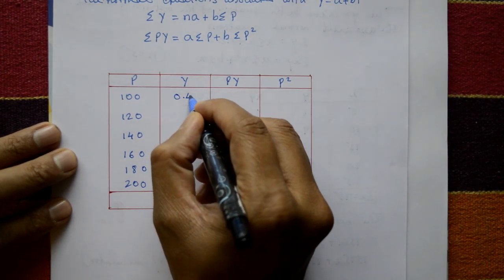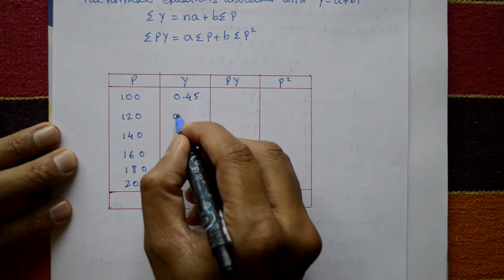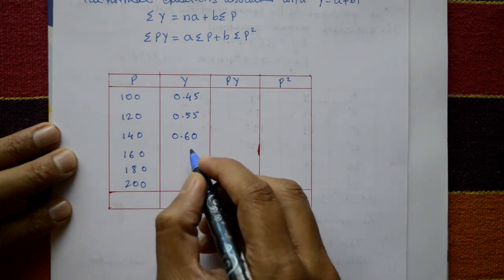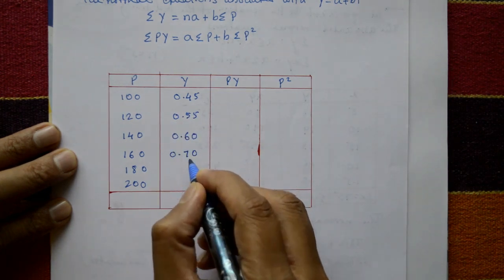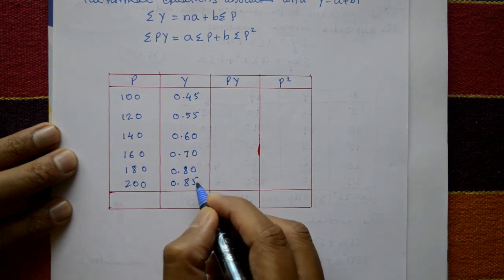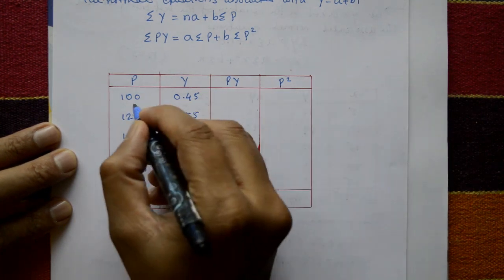And Y values are 0.45, 0.55, 0.60, 0.70, 0.80, and 0.85. Next, P into Y multiplication of these two.